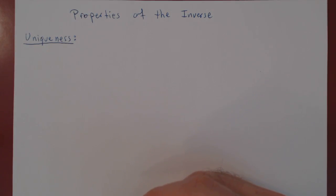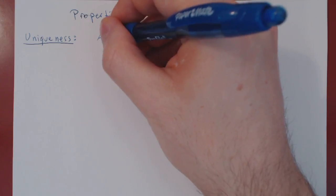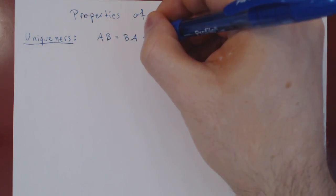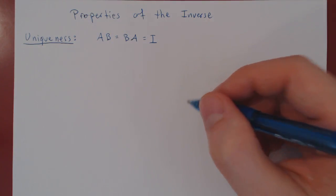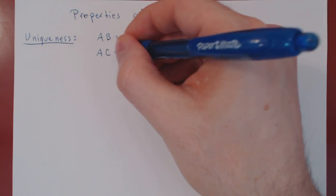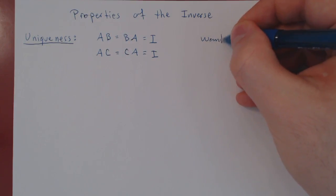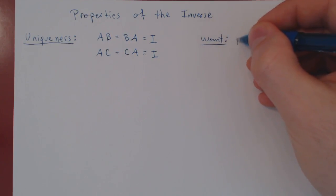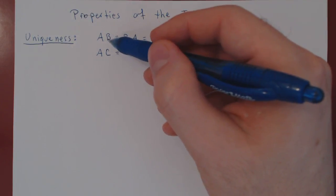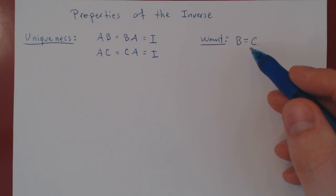Suppose we have a square matrix A and two inverses. Suppose that B is an inverse of A, so A times B equals B times A equals I. And suppose we have a second inverse of A, call it C, so A times C equals C times A equals I. What we want to show is simply that B equals C — if any two inverses of A are always equal, there is only one inverse of A.